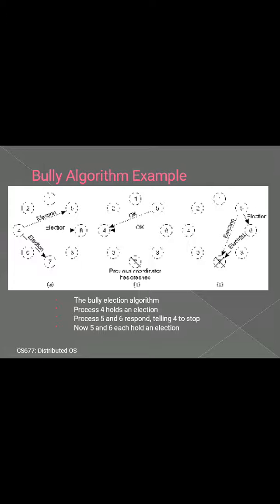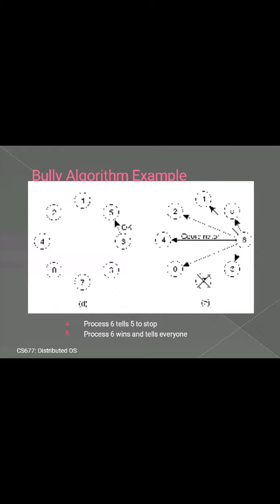In Figure C, both 5 and 6 hold elections, each only sending messages to those processes higher than itself. Figure D shows that process 6 tells 5 that it will take over. At this point, 6 knows that 7 is dead and that 6 is the winner. If information about the state needs to be collected from disk to pick up where the old coordinator left off, process 6 must do what is needed. When ready to take over, 6 announces this by sending a coordinator message to all running processes. In this way, the failure of process 7 is handled with the help of the bully algorithm.